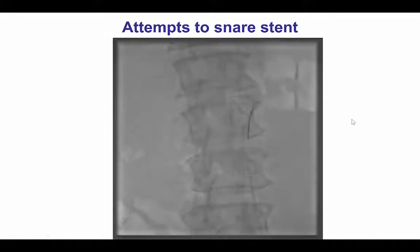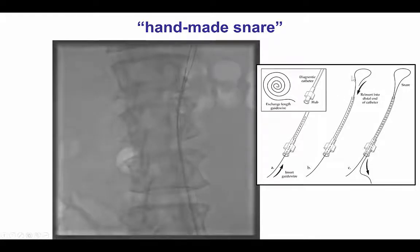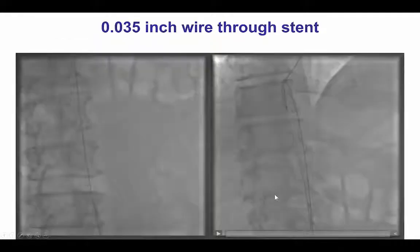We made attempts to snare the stent with a three-loop snare that were unsuccessful. We then made our own snare by advancing a long guidewire through a diagnostic multipurpose catheter. The front end was reinserted into the tip of the diagnostic catheter and pushed all the way back, and then by pulling the back end of the wire, we were able to make the loop of the snare smaller and capture the stent.